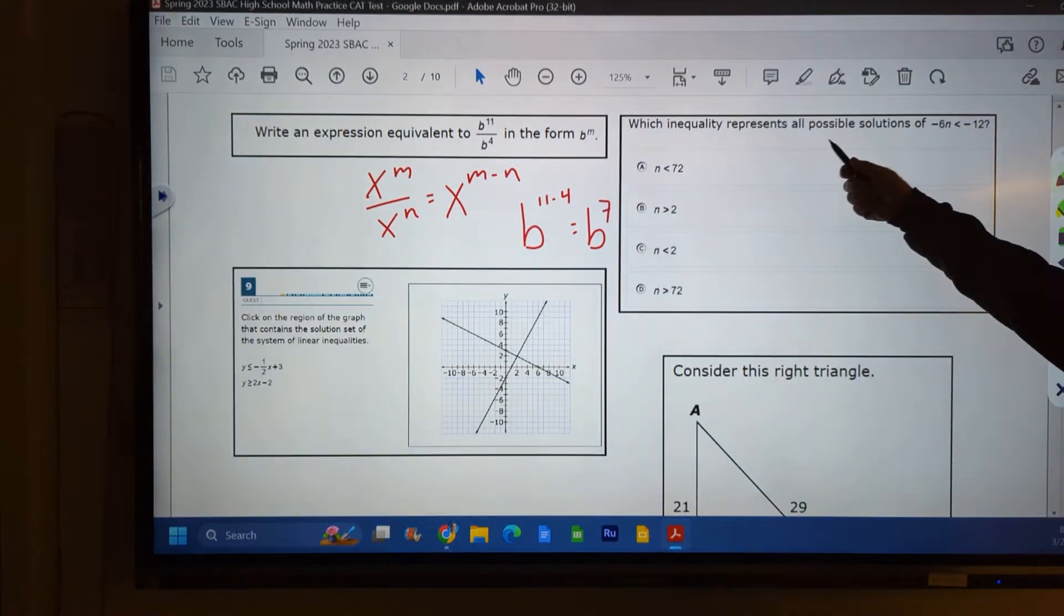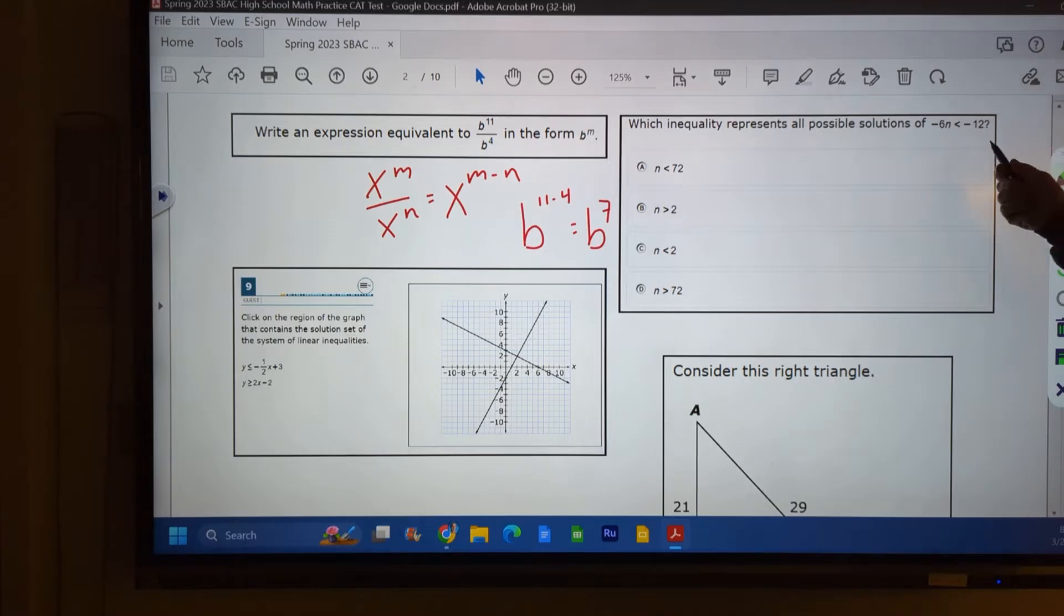Which inequality represents all possible solutions? As I look at that problem, I know there's a little bit of a trick to it. So I'm thinking about it. And I remember that trick. It's when I divide or multiply by a negative, I have to switch that sign. So that less than sign becomes greater than when I divide by a negative. Negative 6n divided by negative 6 is n. That thing switched. Negative 12 divided by negative 6 is 2 and n is greater than 2.